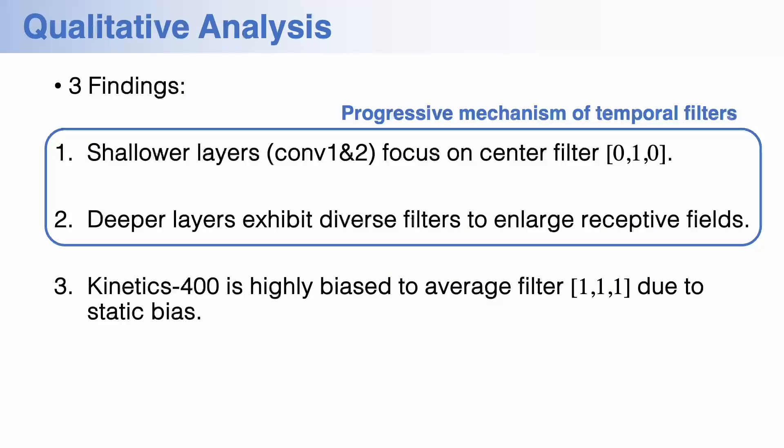In summary, we have three findings. First, the shallower layers focus on center filter to extract appearance features. Second, the deeper layers exhibit diverse temporal filters to enlarge receptive temporal fields of the filter to encode various temporal dynamics. Third, the Kinetics dataset is highly biased to average filters due to so-called static bias. The former two findings show progressive mechanisms of temporal filters.